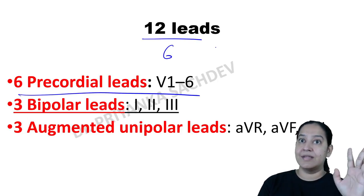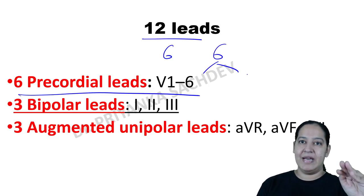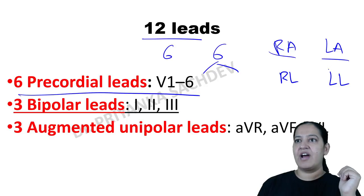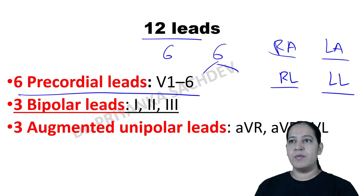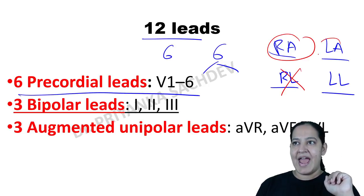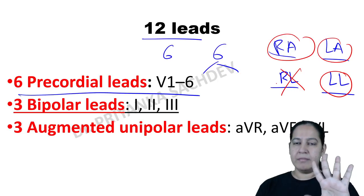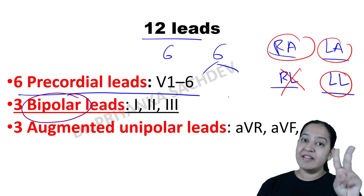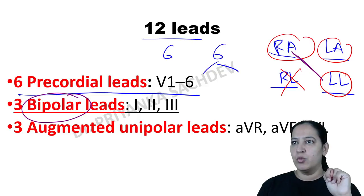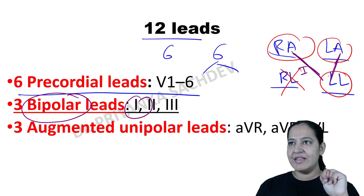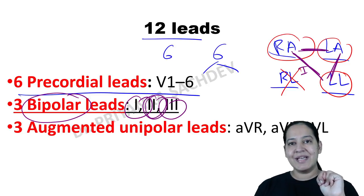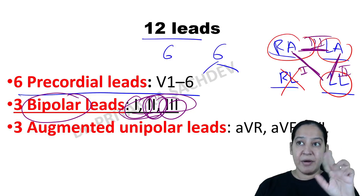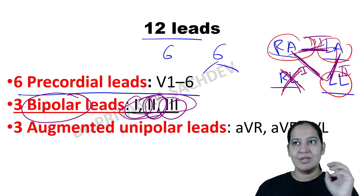Now for the limb leads: we have 3 working electrodes — RA, LA, and LL — forming an equilateral triangle (Einthoven's triangle). Bipolar leads are produced by taking the potential difference between two adjacent electrodes: Lead 1 is the difference between LA and RA, Lead 2 is the difference between LL and RA, and Lead 3 is the difference between LL and LA.